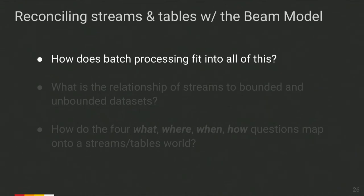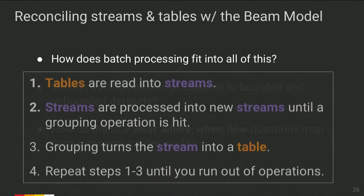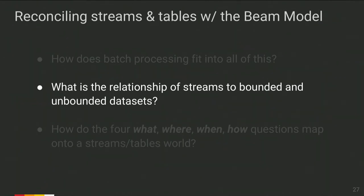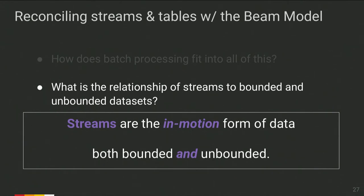To answer the question of how batch processing fits in: tables are read into streams, per-element operations are applied to streams, then a grouping operation converts the stream into a table, and the next stage consumes the output. In the MapReduce case, you apply this pattern twice. As for the relation of streams to bounded and unbounded datasets — not a lot of relation. We never saw any mention of boundedness. Streams are data in motion, and that's it. Whether MapReduce gets bounded or unbounded input does not matter. Data is in motion no matter what.